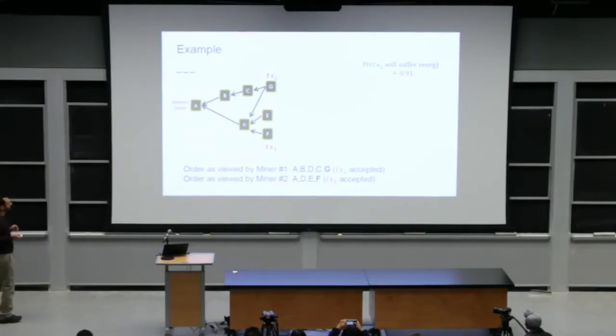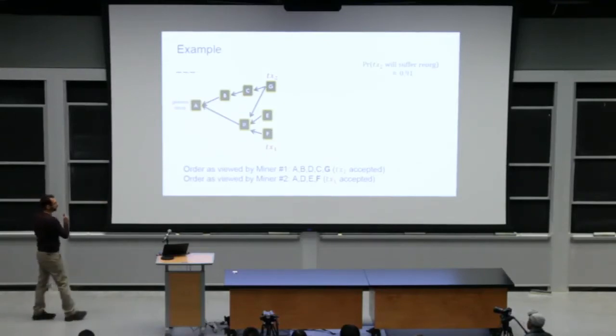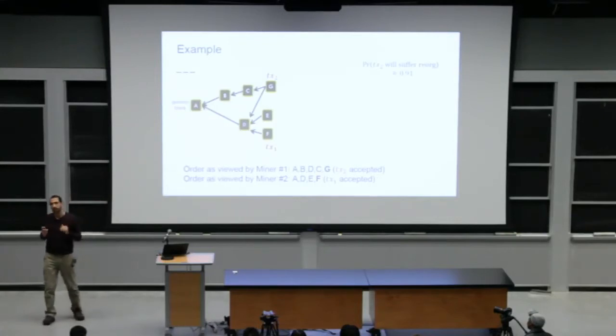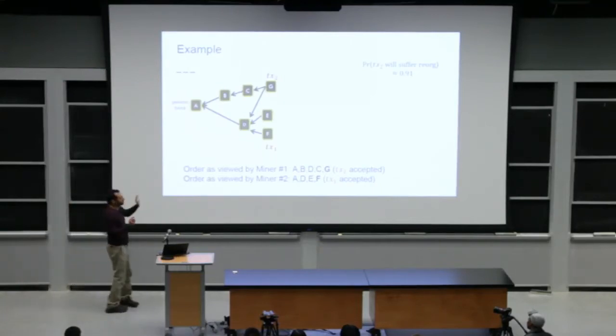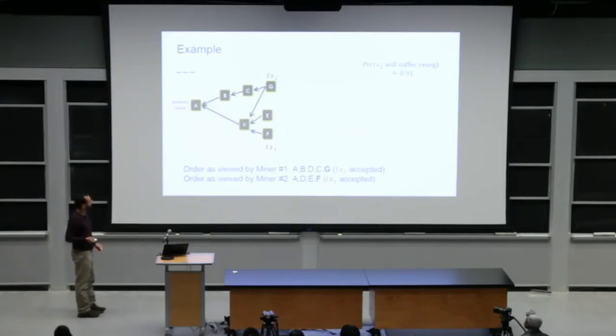Okay. So imagine we have again, we have a dag and this is the block. A to your left is the Genesis block and time flows from the left to right. So let's say we have this dad and we have transaction two in block G, transaction one in block F and they conflict. Okay. So both of these blocks, nonetheless should be incorporated into the ledger. Assuming the proof of work was solved in a valid manner, the difficulty was updated, et cetera.